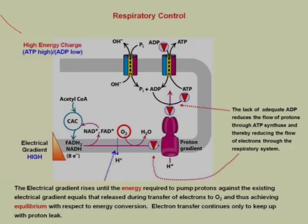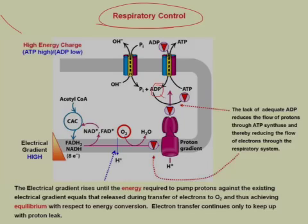The fact that electron carriers are oxidized and recycled back to the TCA cycle only occurs if ADP is simultaneously phosphorylated to ATP. This tight coupling of electron transport to ATP synthesis is called respiratory control. Respiratory control means there is a tight coupling between the conversion of ADP to ATP and the transfer of electrons.